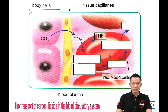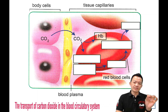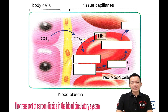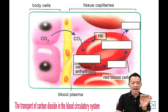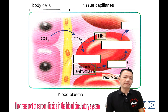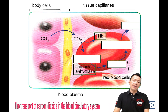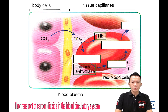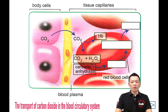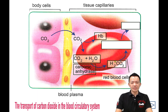So 23% becomes carbaminohemoglobin. Now, inside the erythrocyte there is an enzyme called carbonic anhydrase. The function of carbonic anhydrase is to join carbon dioxide together with water to form the acid called carbonic acid.